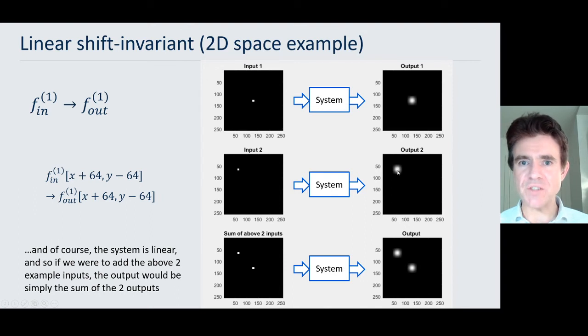we get exactly the same response function, that same blurred response, but just shifted to the location of that point source in the input function. So you can see the output is the same shape and size as the output obtained in the first case, but just repositioned according to the location of the input.